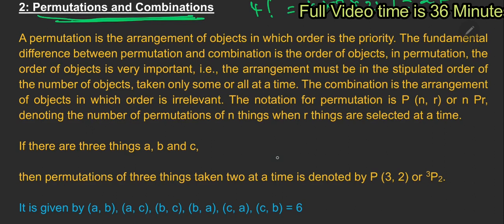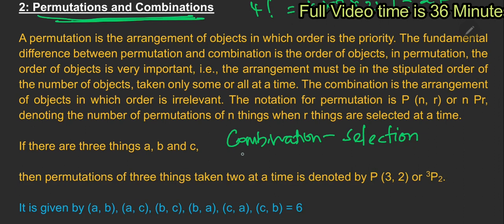Permutation and combination are different. If you look at the combination, it is only selection. For example, there are 5 names, and from those 5 names you can select two. If you look at a class, you can select a class leader and an alternative leader. That is the combination — it involves only selection.